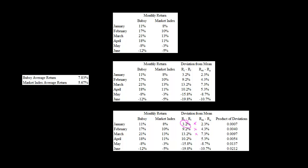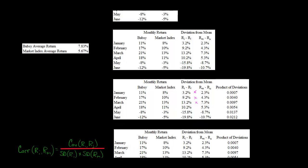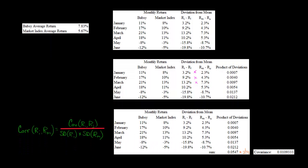Then we multiply these deviations together. Like 3.2% times 2.3% gives 0.0007 — this is the product of the deviations. There's some rounding there. Then we sum all these products of the deviations together and get 0.0547. We multiply by 1 divided by n minus 1 — n is the number of observations, so we have 6, meaning 1 over 5, which is 0.2. So 0.2 times 0.0547 gives us our covariance: 0.0109333.